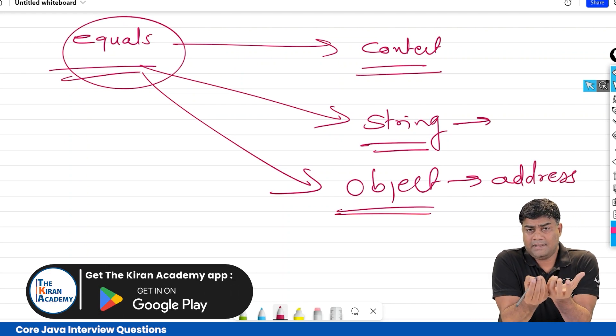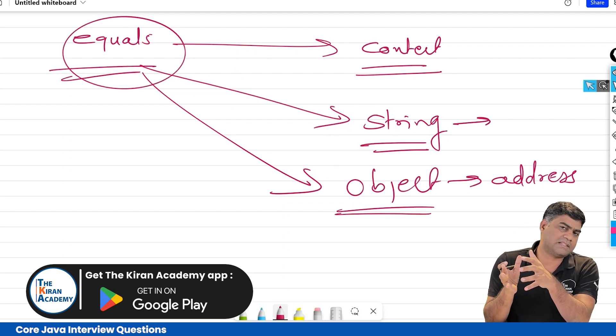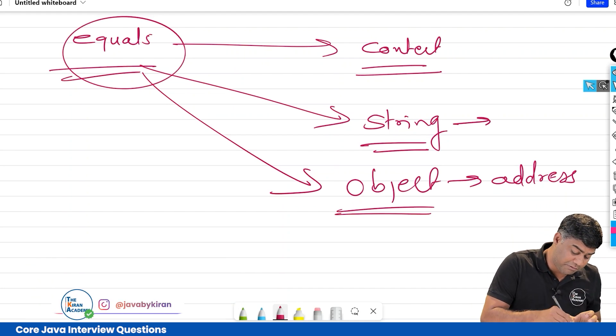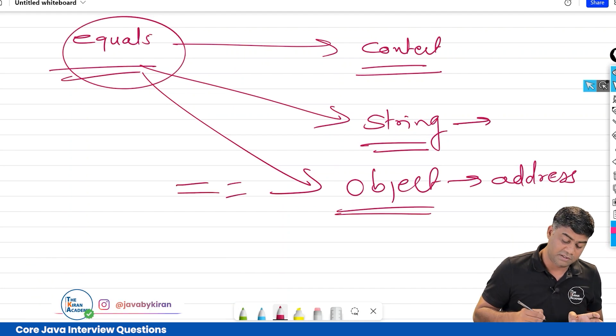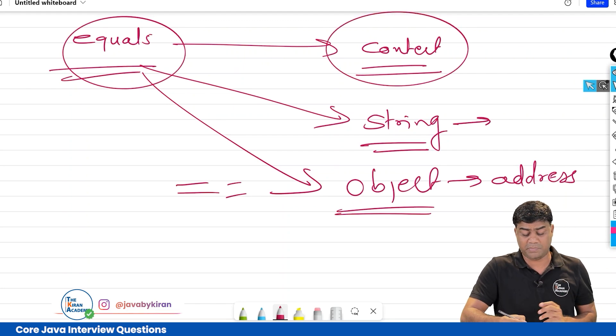So you should ask whether you are asking me equals method of String class or equals method of Object class. If it's Object class, then it is equivalent to double equal to sign. But if it's of String class, then it is checking content. It's very simple.